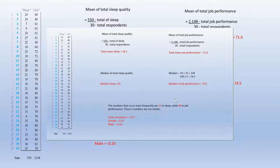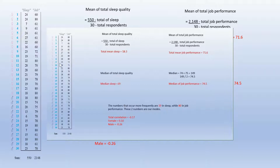For the median of job performance, it is the mean of the two sorted middle numbers. We have 74 plus 75 equal to 149, divided by 2, giving us a median of job performance of 74.5. The numbers that occur most frequently are 19 in sleep and 80 in job performance. These two numbers are our modes.